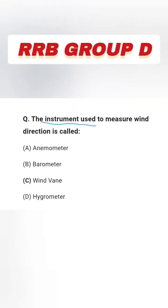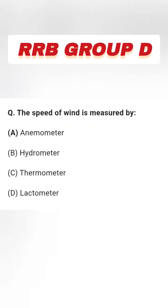Next question: The instrument used to measure wind direction is called — options: anemometer, barometer, wind vane, and hygrometer. The right answer is option C, wind vane.